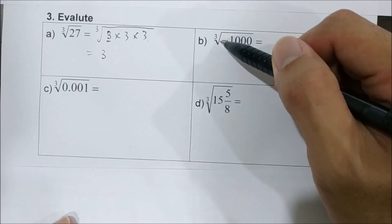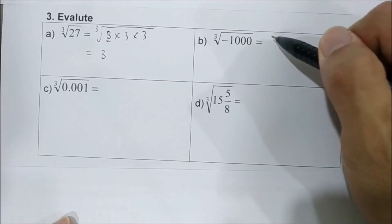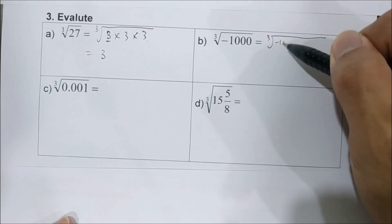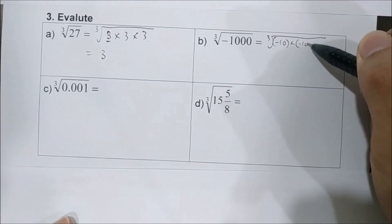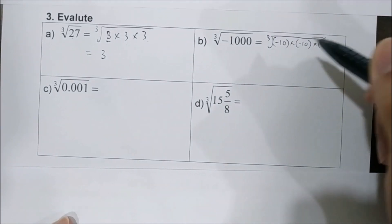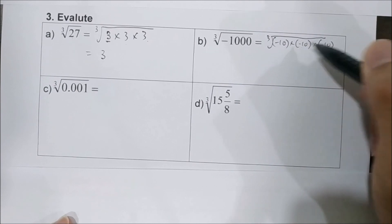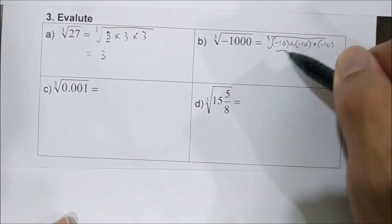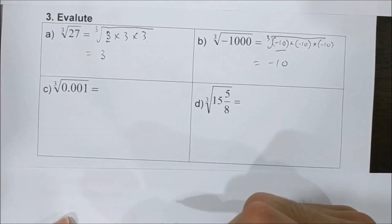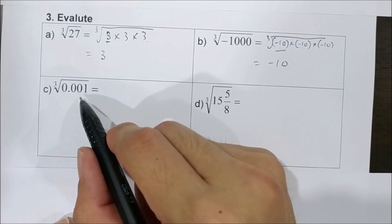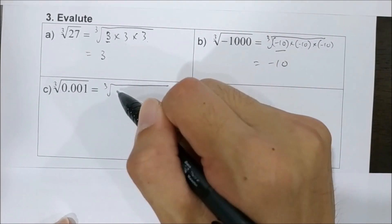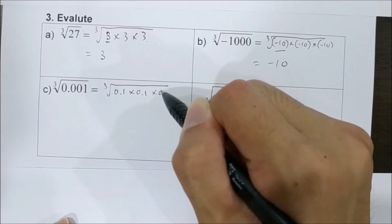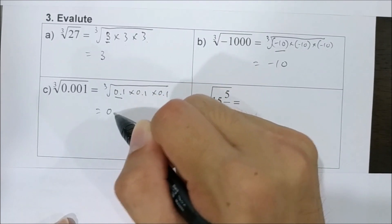Likewise, the cube root of negative 1,000 is found because negative 10 times negative 10 times negative 10 equals negative 1,000, so the answer is negative 10. The cube root of 0.001 is 0.1 times 0.1 times 0.1, so the answer is 0.1.